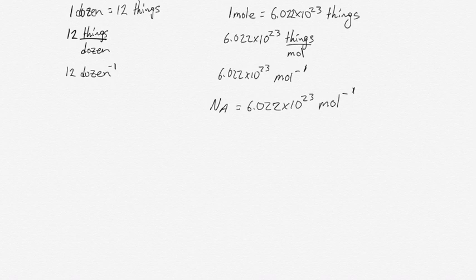The dozen is a very familiar counting unit. One dozen is 12 things, and if you want to rewrite that as a ratio of units, it's 12 things per dozen - 12 eggs, 12 elephants, who cares?